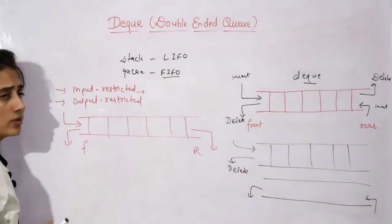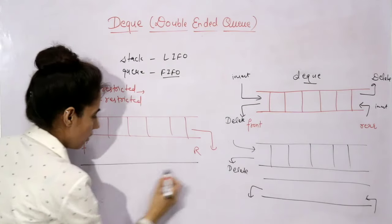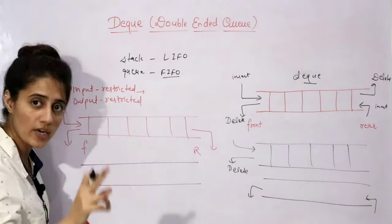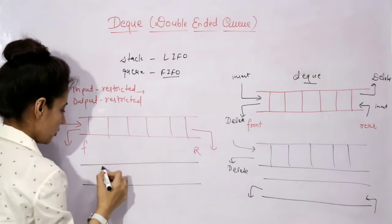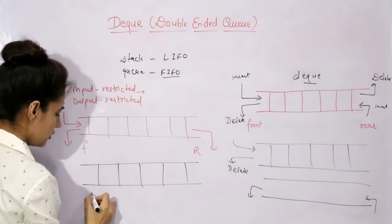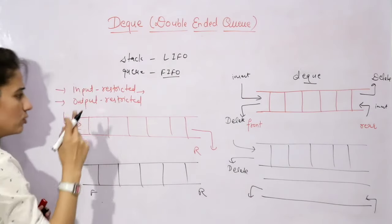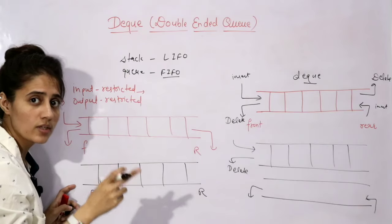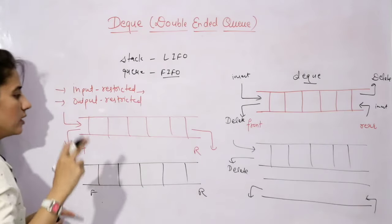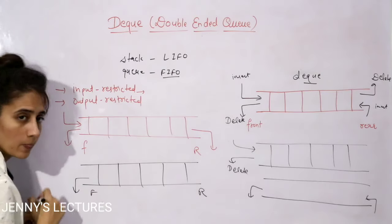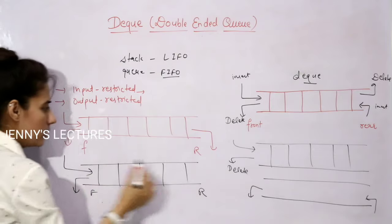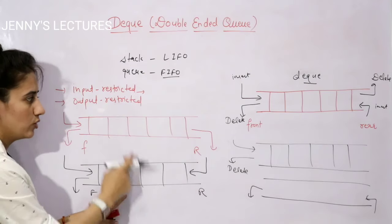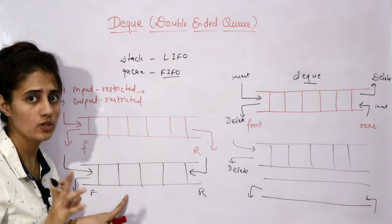Next is the output restricted queue. As the name suggests, we put restrictions on output — that is, on the delete operation. Deletion can be from one end only, but insertion is possible from both ends. So if I take deletion from one end, you cannot delete from the other end, but you can insert from both ends. This is the output restricted dequeue.